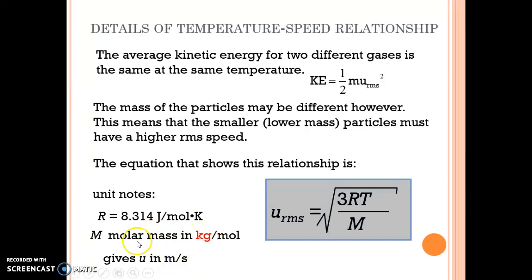And then that gives us meters per second for the root mean square speed because you have kilograms canceling out. You have moles canceling out. You have Kelvin canceling out because we've got the temperature in there. What am I left with? Remember that joule is kilogram meter squared per second squared. So meters per second squared. I take the square root of that and get just meters per second. So that works out nicely.